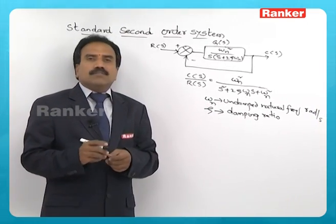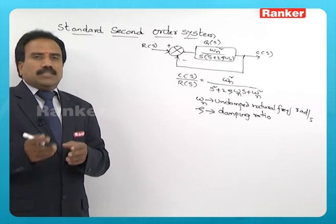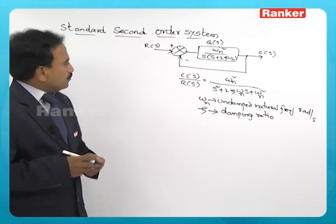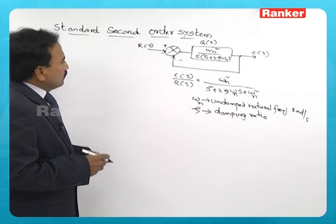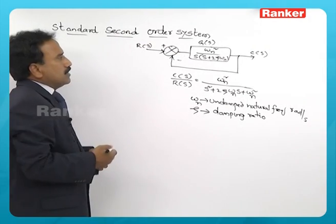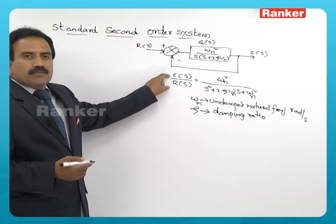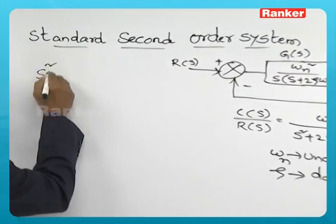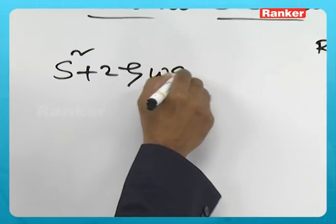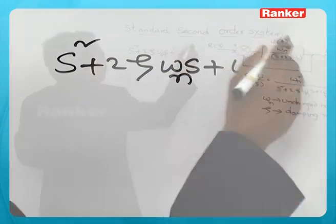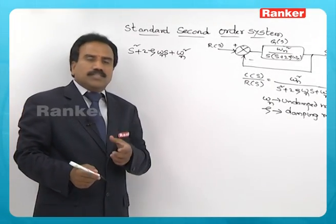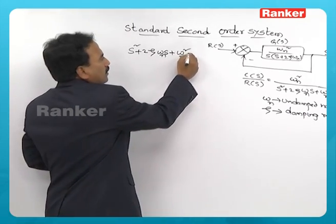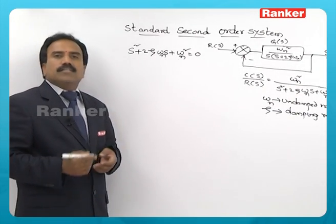What exactly is undamped natural frequency and zeta and their significance we will see with the help of one diagram. Now if you see the denominator of this transfer function, it is known as characteristic equation or characteristic polynomial. It is a second order function, so it has two roots. When you equate it to zero, it becomes characteristic equation.